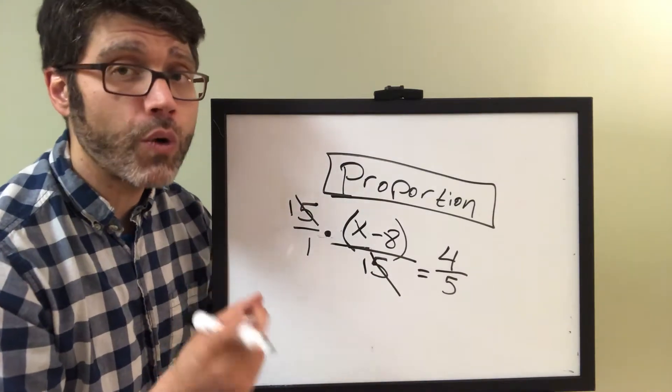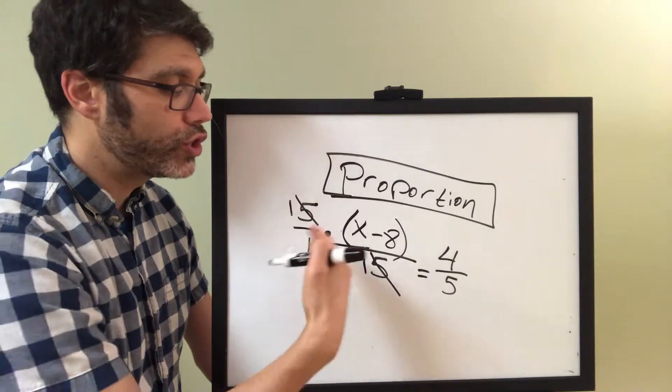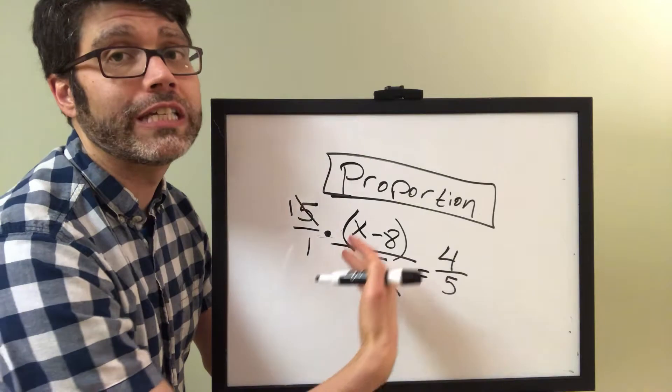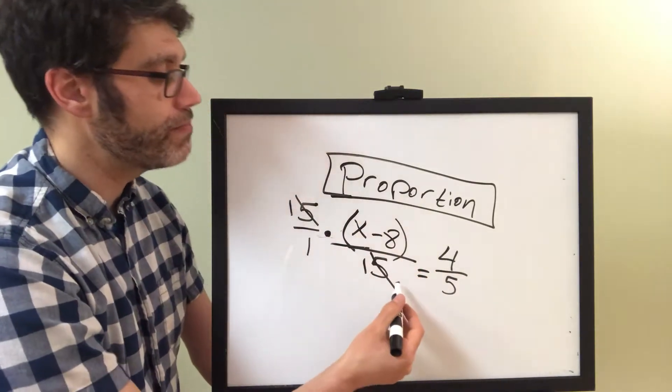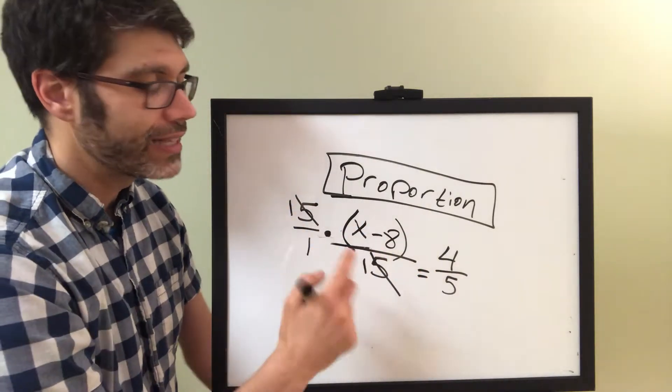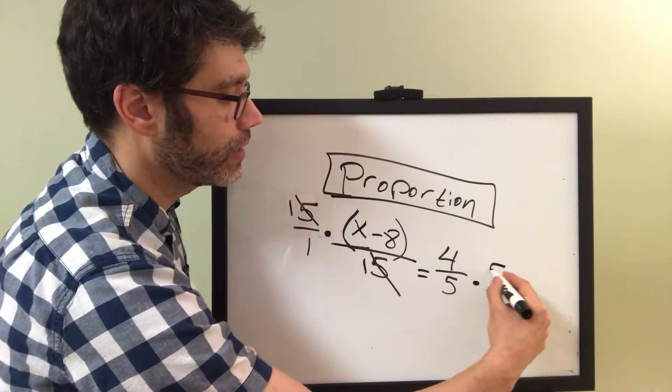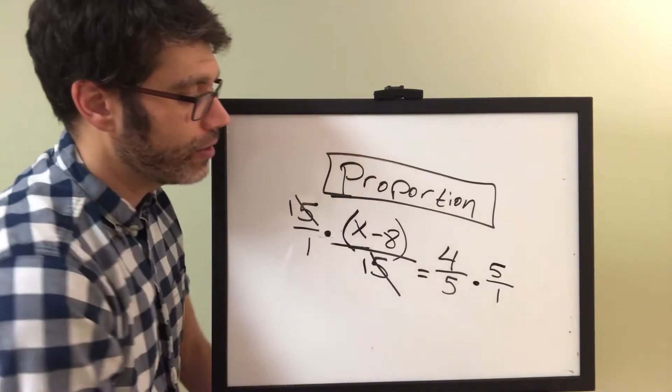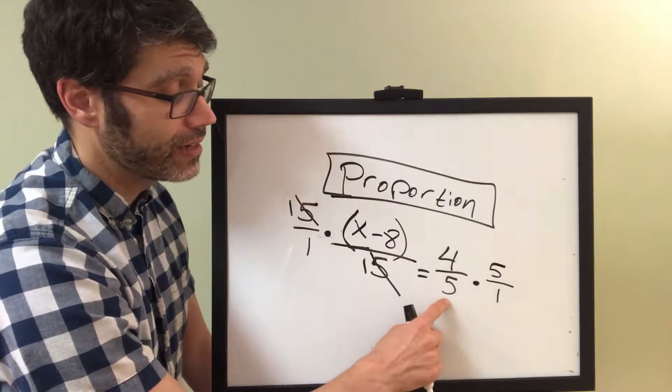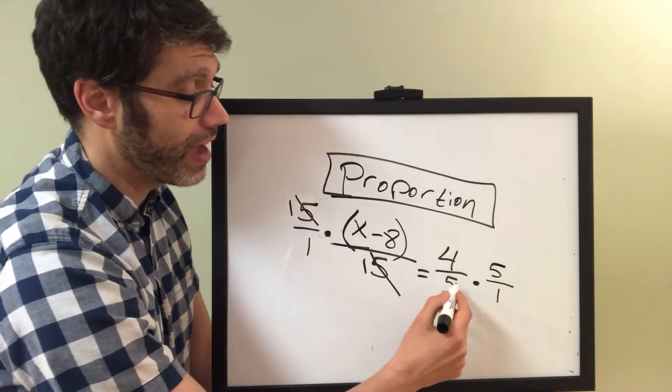Remember, though, because of the property of equality, we need to do to one side what we did to the other. So, since we multiply this side by 5, to keep this balanced, we need to do the exact same thing to the other side. Now, it's nice that in this case, it also happens to be a 5 in the denominator.